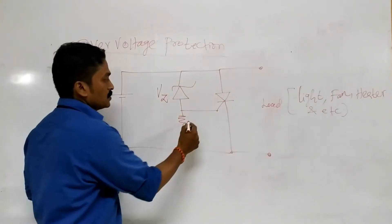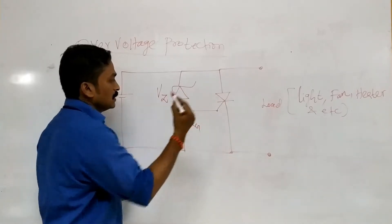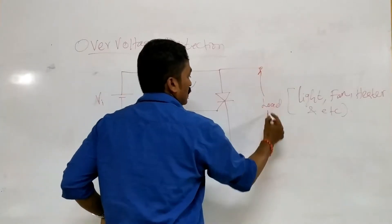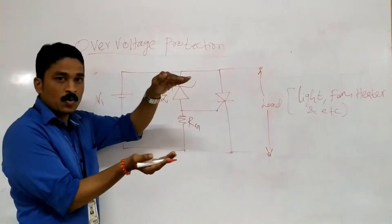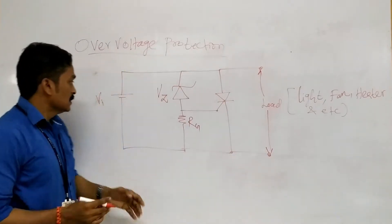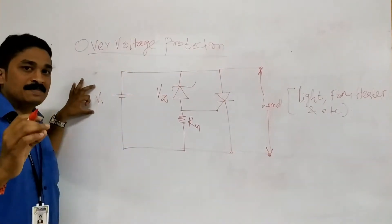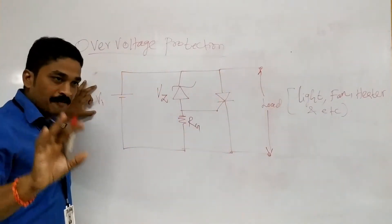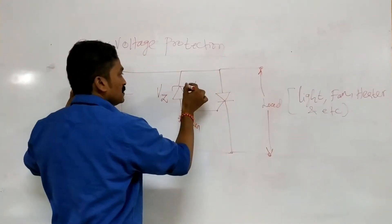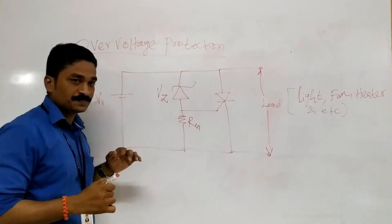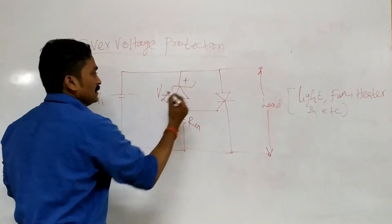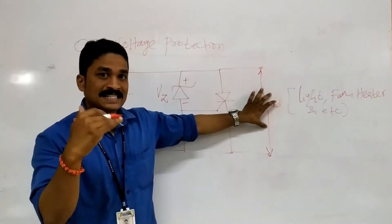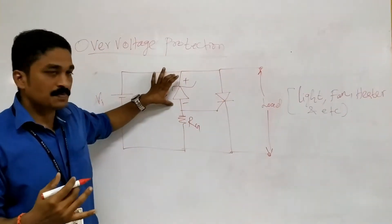Let us see how the SCR-based circuit works for over-voltage protection of appliances. We have a load, and we want to protect the voltage across the load. First, we fix the maximum voltage rating for the load, and according to that we select an appropriate Zener diode. The Zener diode is connected in reverse bias condition, chosen to match the maximum voltage rating.